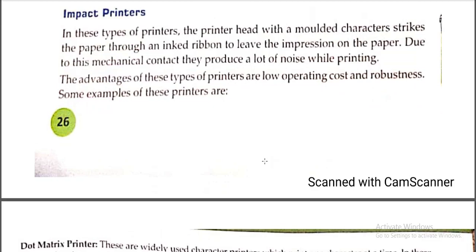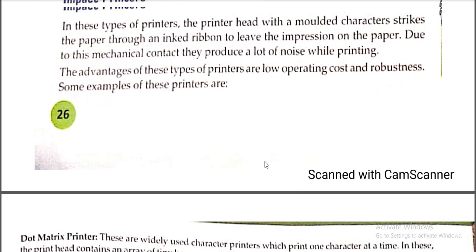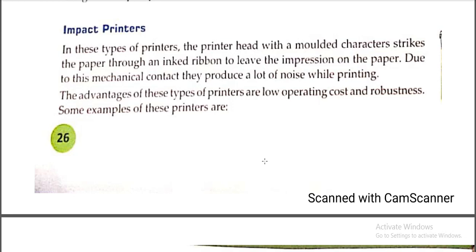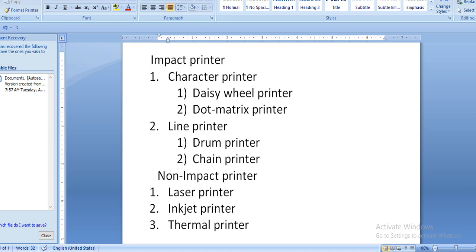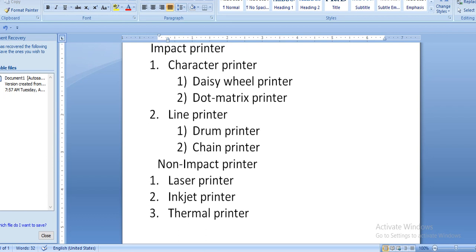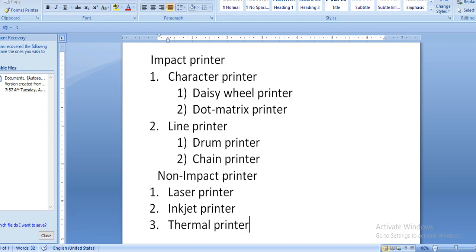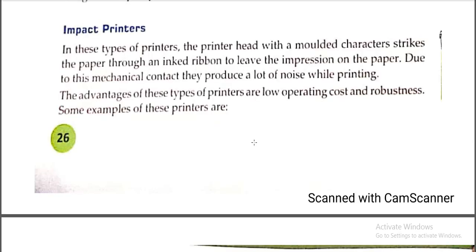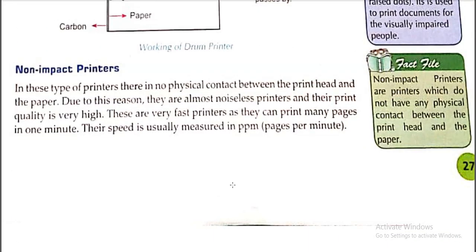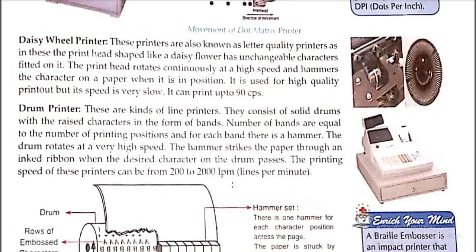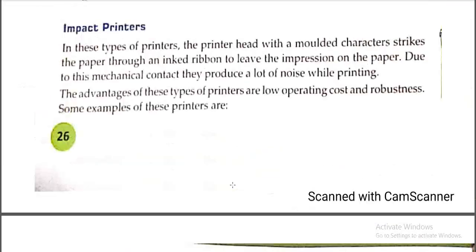This is the end of today's lecture. For homework, you will write in detail about impact printers and their types — character printer and line printer, including daisy wheel printer — and draw a diagram of each type in your copy. Revise the topic. Stay home, stay safe, and defeat COVID-19. Thank you very much for watching.